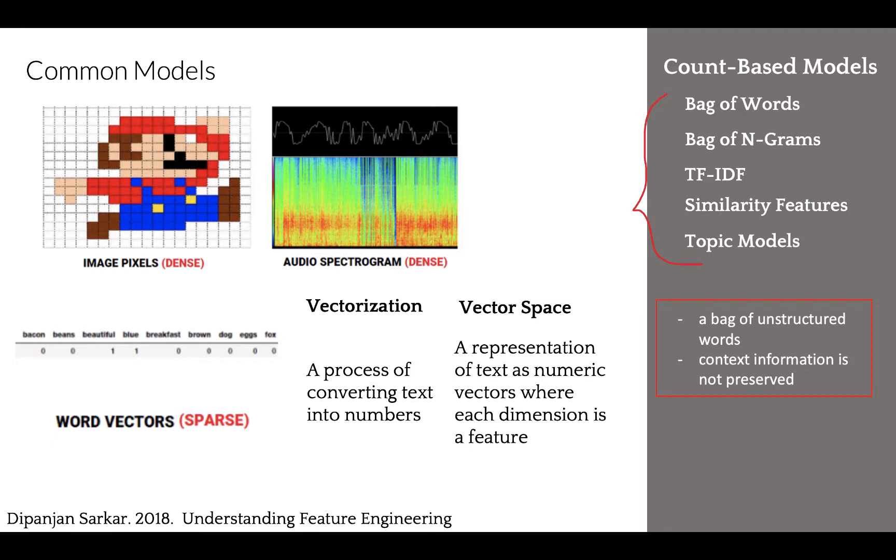However, when it comes to raw text data, first we convert our text into numbers in a process called vectorization.